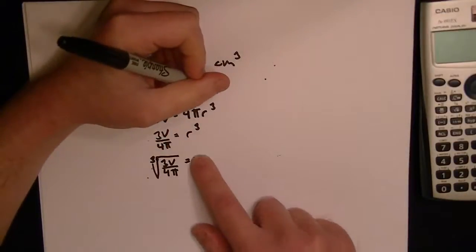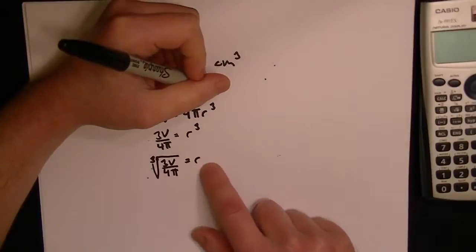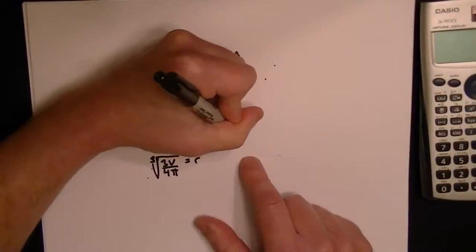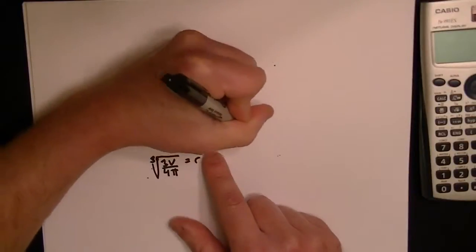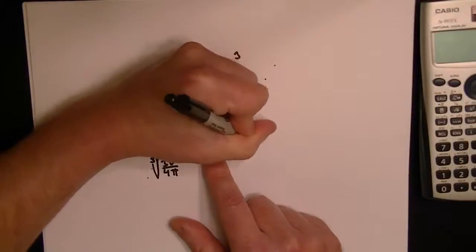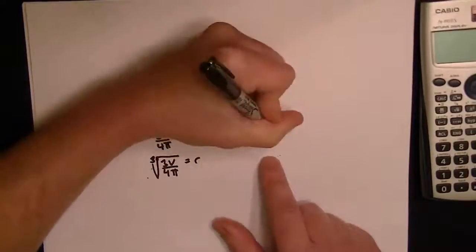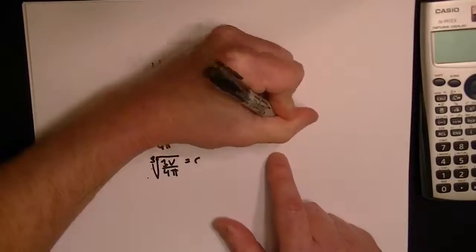To do it on your calculator, your calculator might not have a cubed root button. So the same thing is you take 3v over 4 pi, and you put it to the 1 third in your calculator, and that will give you equal to r.